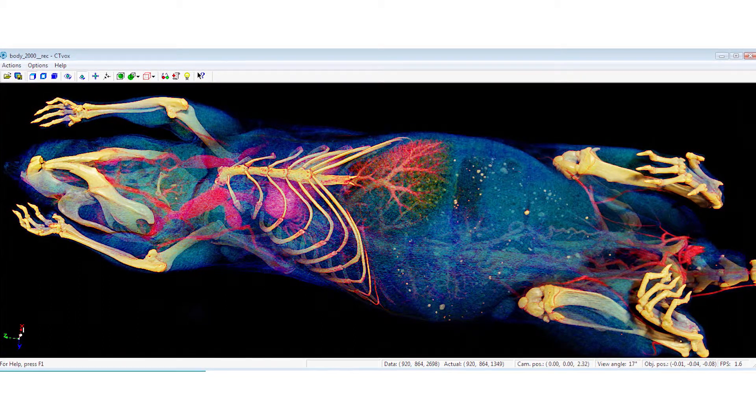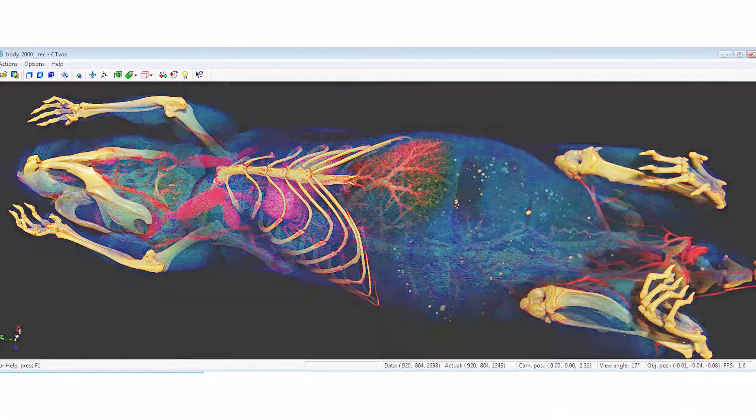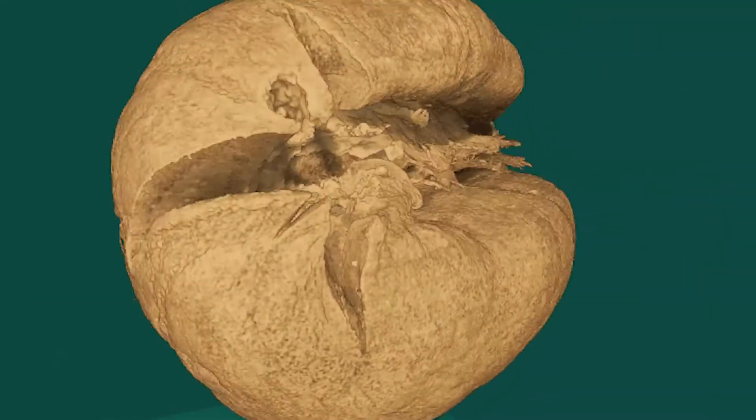In something like forensics, micro CT has made a difference in some criminal court cases, actually producing evidence that makes a difference in finding out about a homicide case, for example. And in the food industry, things we might buy in a supermarket.